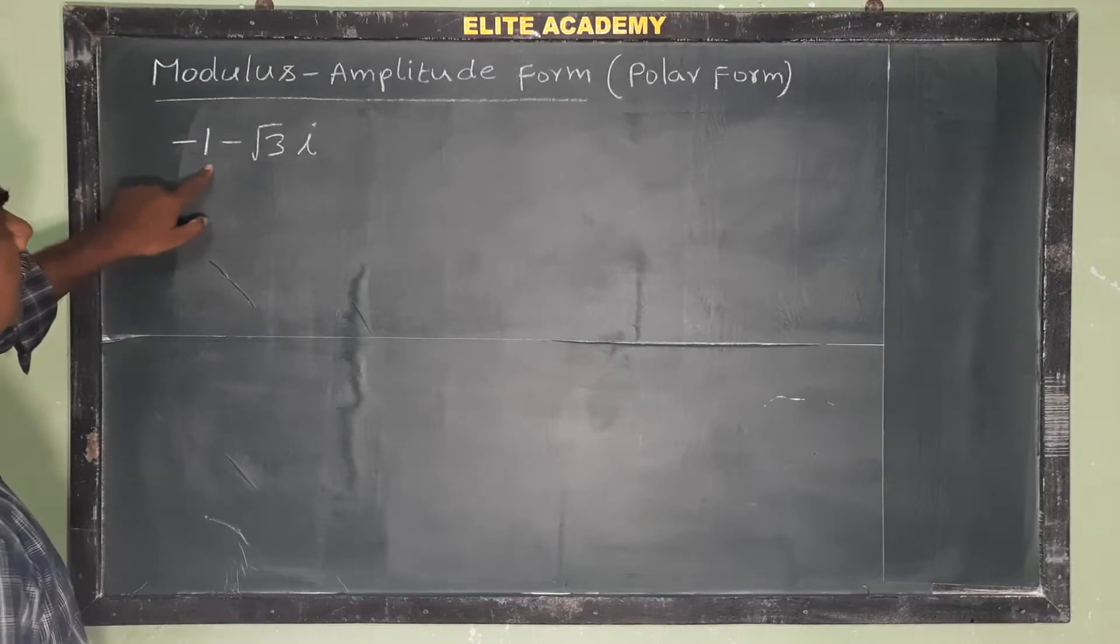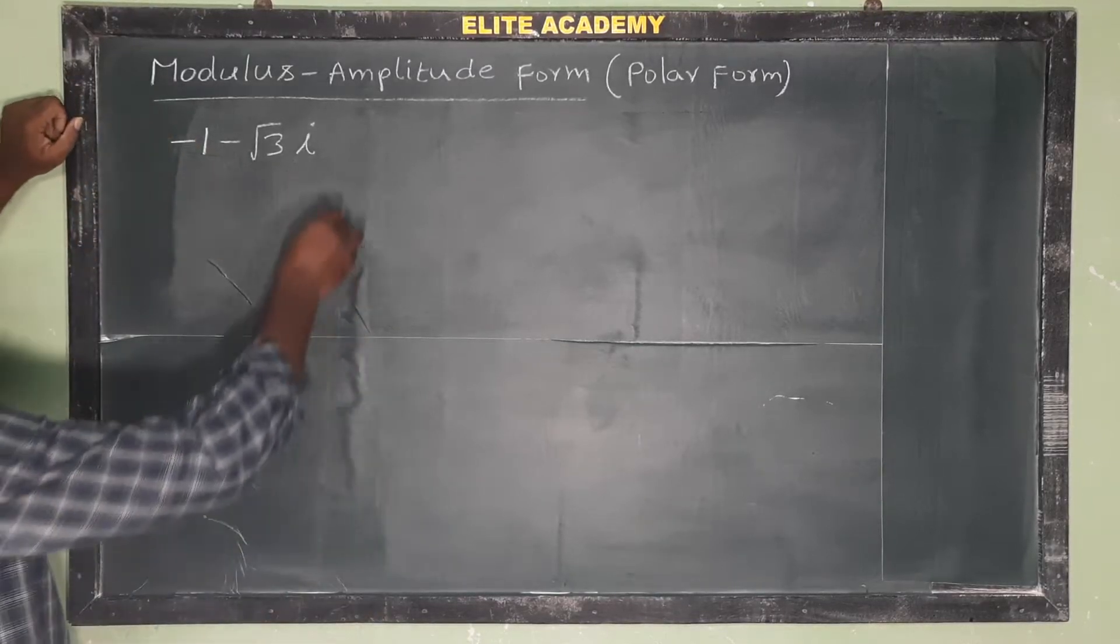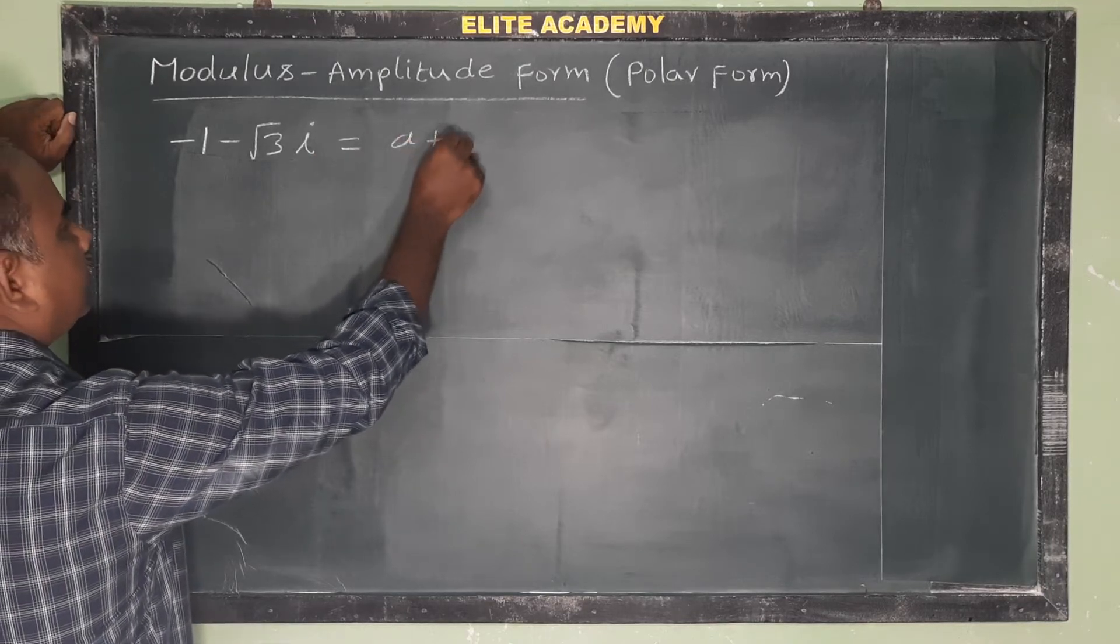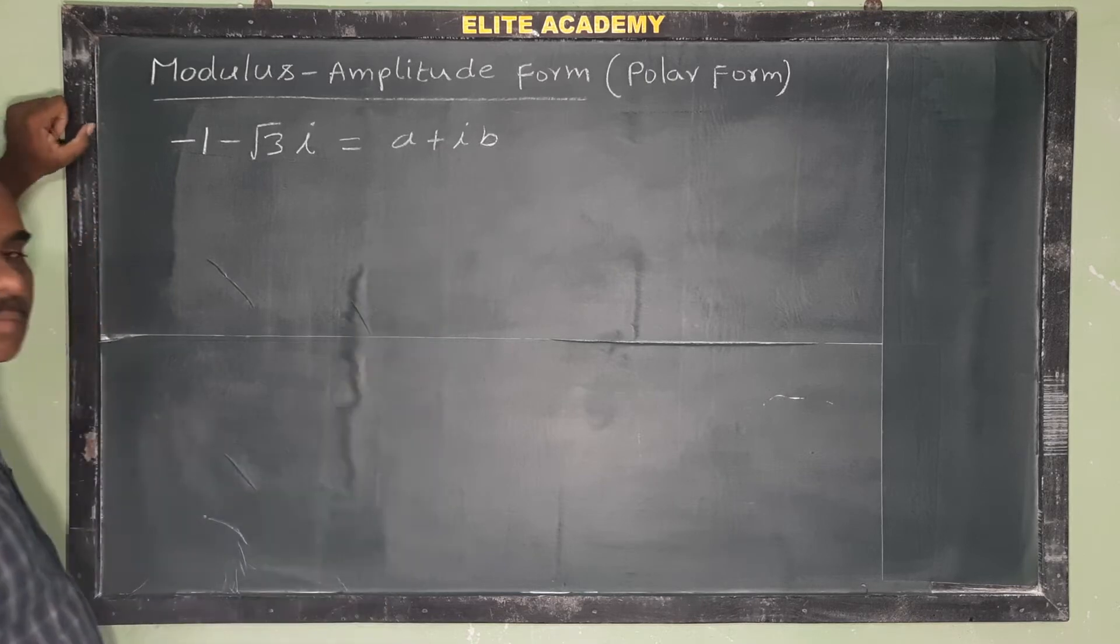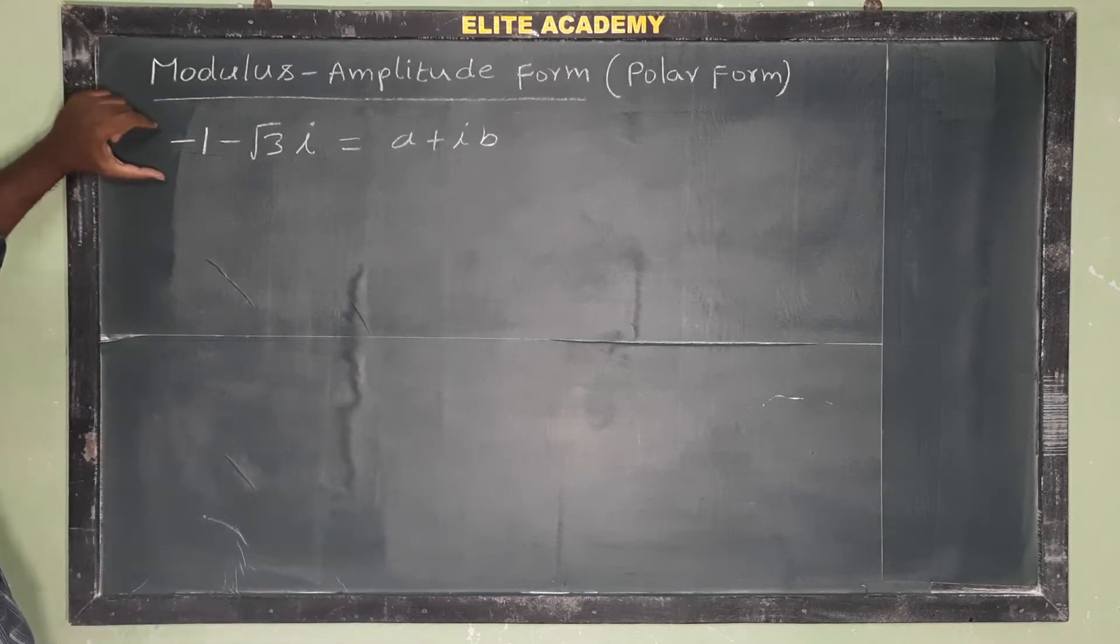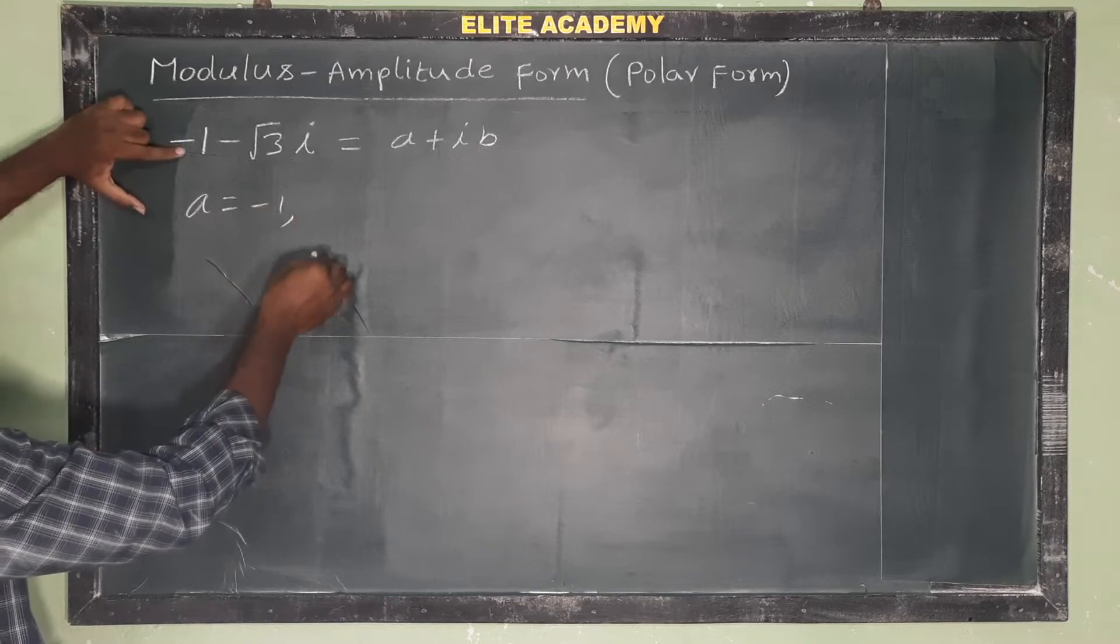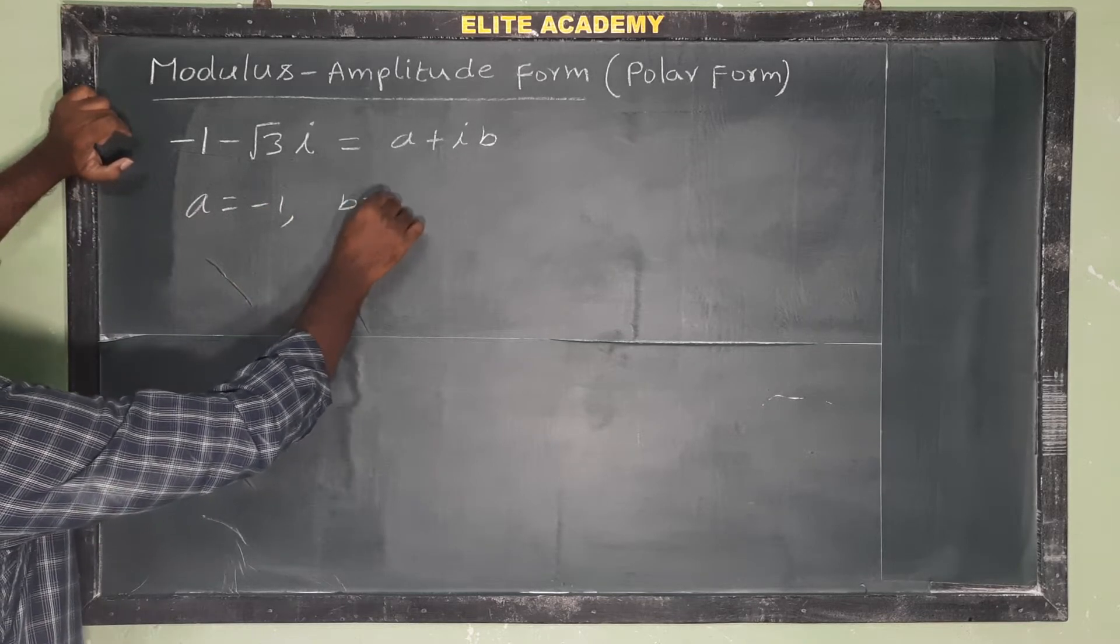Next problem: -1 - √3i. We have to convert this into polar form. Let us compare with a + ib. Then we get a = -1 (real part), b = -√3 (imaginary part).